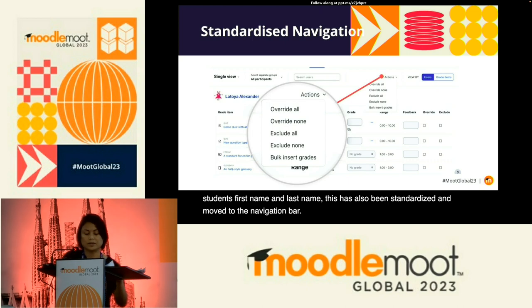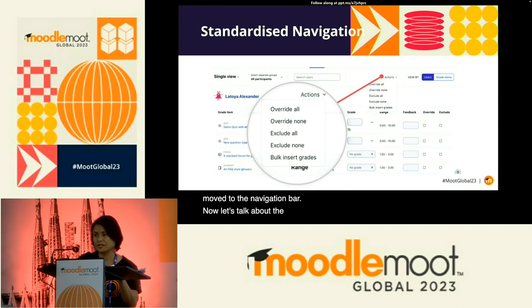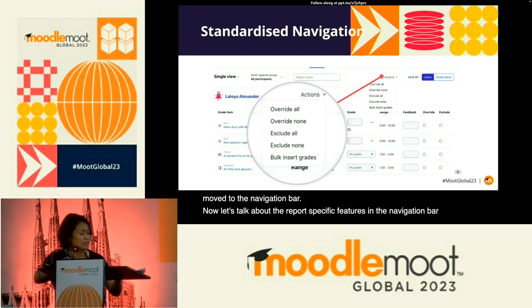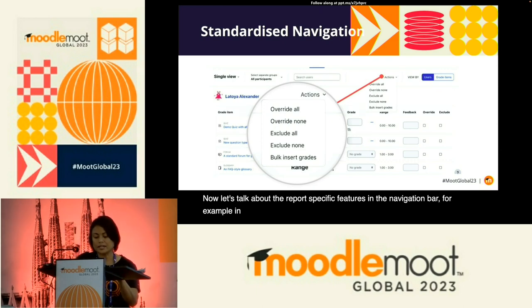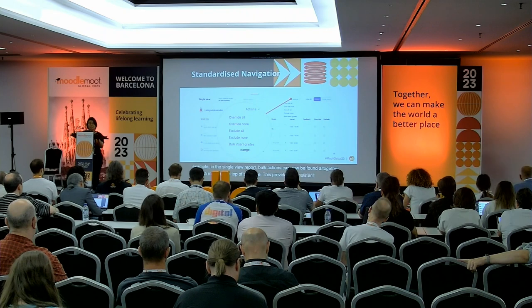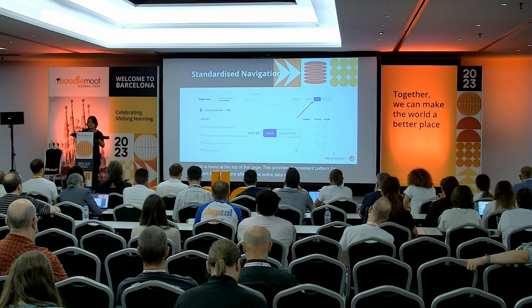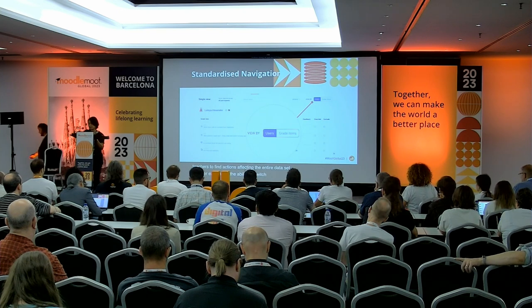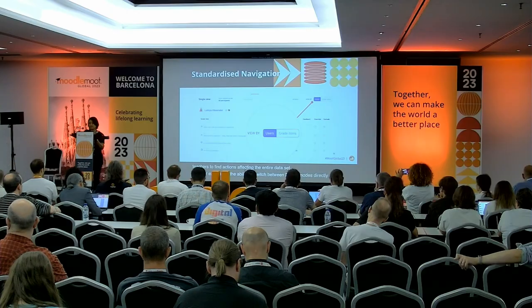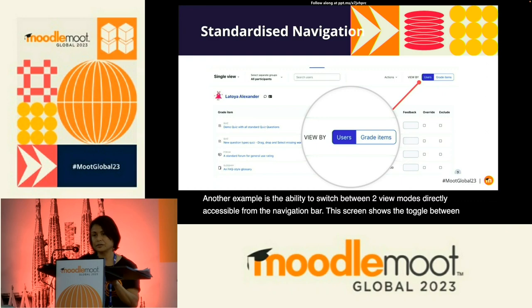Now let's talk about the report-specific features in the navigation bar. For example, in the single view report, bulk actions can now be found together within a menu at the top of the page, providing a consistent pattern for teachers to find actions affecting the entire data set. Another example is the ability to switch between two view modes directly accessible from the navigation bar — this screen shows the toggle between viewing users or grade items in the single view report.